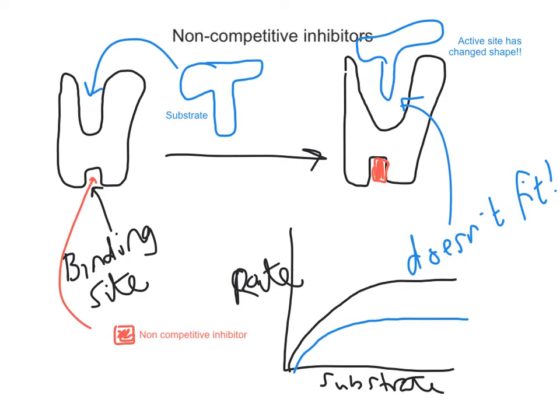In the presence of the non-competitive inhibitor, the maximum rate of reaction is never reached, because it's effectively denatured the enzyme. So it doesn't matter how much more substrate you add — it's never going to reach its maximum potential because the active sites have effectively been removed.